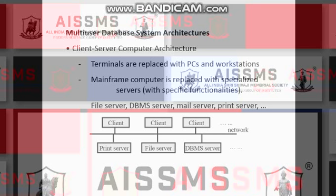A client at any location can send a request to any server. For example, Client 1 can request a file from the file server. Client 2, if wanting to print, can access the print server. Likewise, if any user is trying to retrieve a specific record from the DBMS, the request will be given to the DBMS server, and it will respond accordingly.